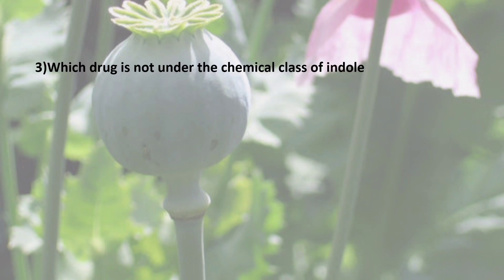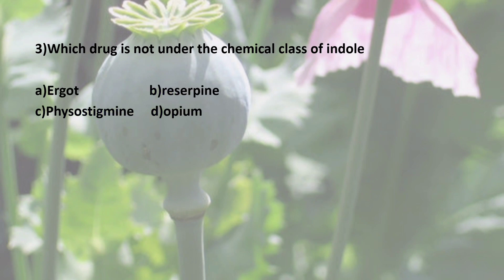Third question: Which drug is NOT under the chemical class of Indole? Options are: A) Ergot, B) Reserpine, C) Physostigmine, D) Opium. Ergot, Reserpine, and Physostigmine are Indole Alkaloids, including Vinca Alkaloids. The correct answer is D — Opium is not an Indole Alkaloid.